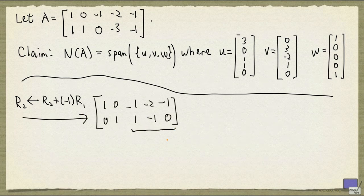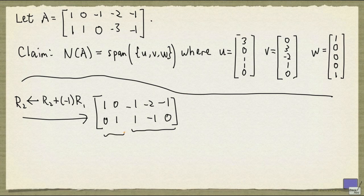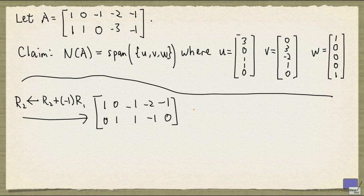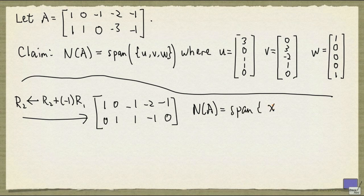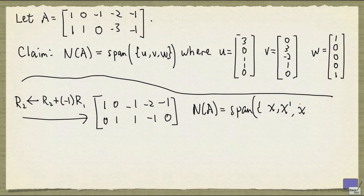So I have three free variables here. And these are my pivot columns. The first two columns are my pivot columns. So right away, we can say that N(A) is given by the span of, say, x, x prime, and x tilde.